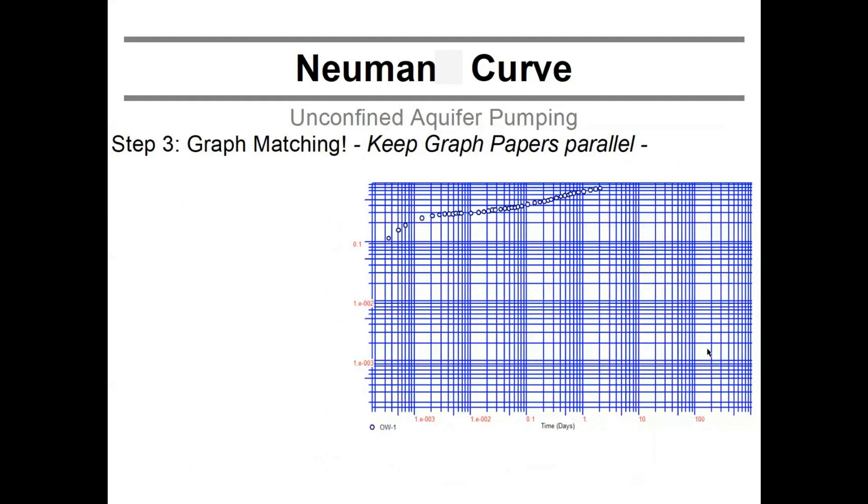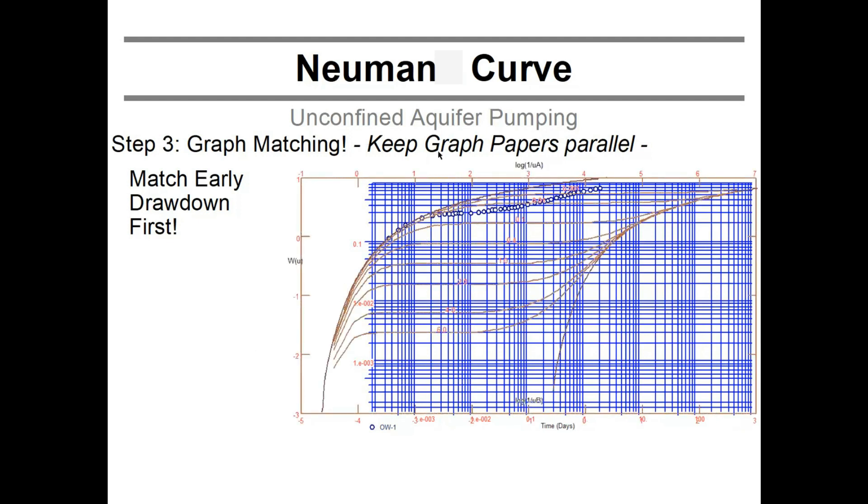Now comes a matching game. And the matching game using the Neuman method is a little bit tricky. Because you need to match one Tice curve on one end, and then slide it over to the second Tice curve. This is your data. And you match the early drawdown, this part of the curve first. So you're going to slide over your Neuman curve that you have created, and you can see that these dots here fit that fairly well up to about this point right there. So this is a good match.